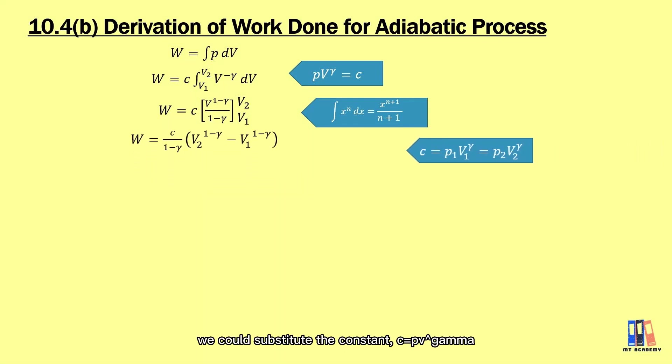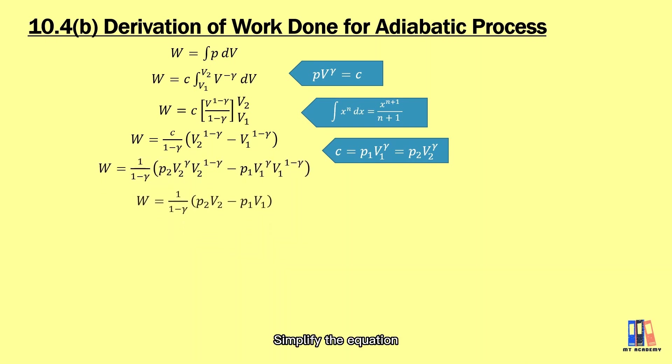After that, we could substitute the constant C with the PV to the power of gamma. Simplify the equation, we obtain 1 over 1 minus gamma multiply bracket of P2V2 minus P1V1. As we know that gamma is more than 1, we could rearrange the equation as 1 over gamma minus 1 multiply the bracket of P1V1 minus P2V2.